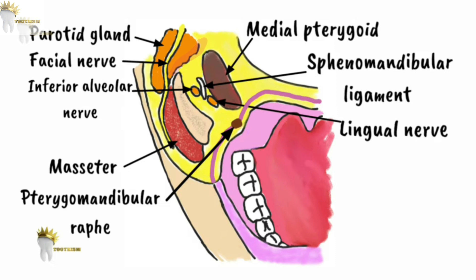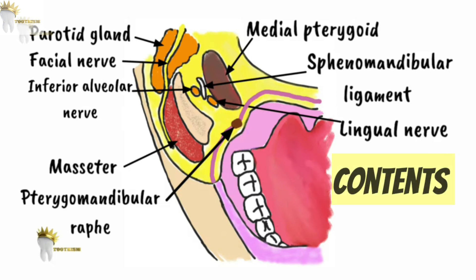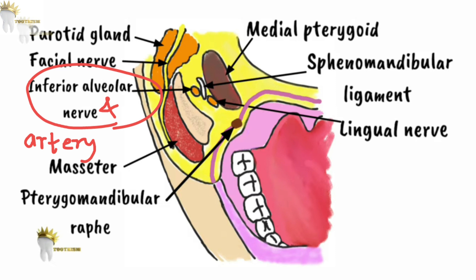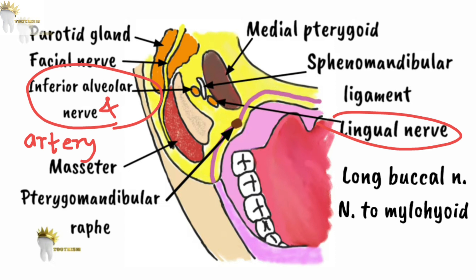The posterior border is formed by the parotid gland and its capsule, and the anterior border is formed by the pterygomandibular raphe, where the buccinator and superior pharyngeal constrictor muscles meet. The contents of this space are quite easy to remember — when we give the inferior alveolar nerve block, this is the space we enter. It contains the inferior alveolar nerve and artery, lingual nerve, long buccal nerve, and nerve to mylohyoid.